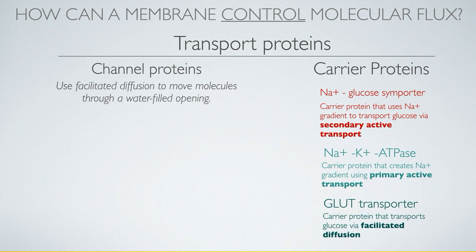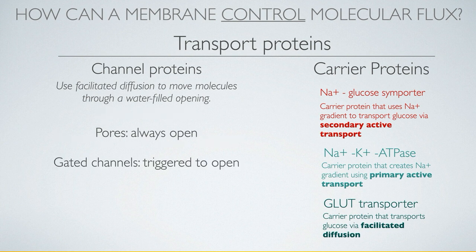There are two categories of channel proteins. The first is what we saw at the beginning: the potassium leak channel, a pore that is always open. The cell can change the density of pores over time to vary the permeability of the membrane, but it is not what we call gated.